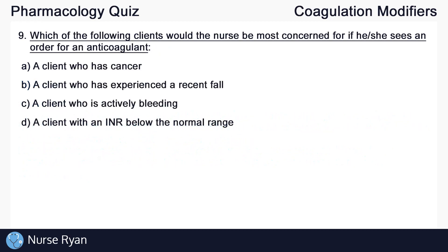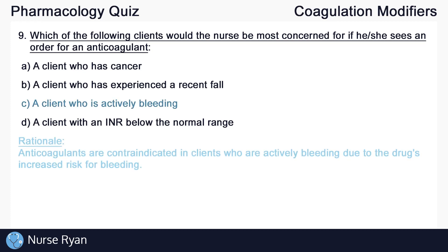Question number nine: Which of the following clients would the nurse be most concerned for if he or she sees an order for an anticoagulant? The answer is C, a client who is actively bleeding. Anticoagulants are contraindicated in clients who are actively bleeding due to the drug's increased risk for bleeding.